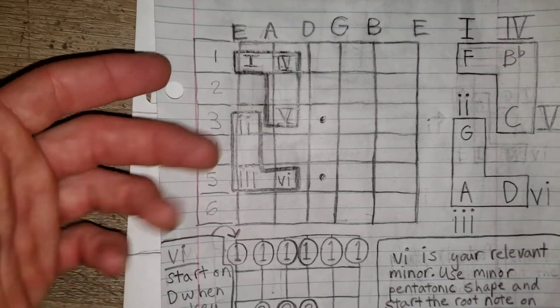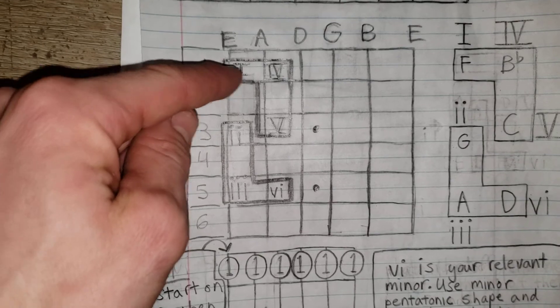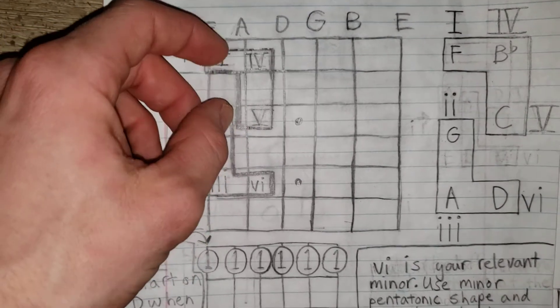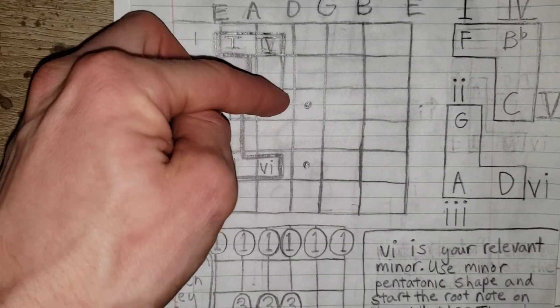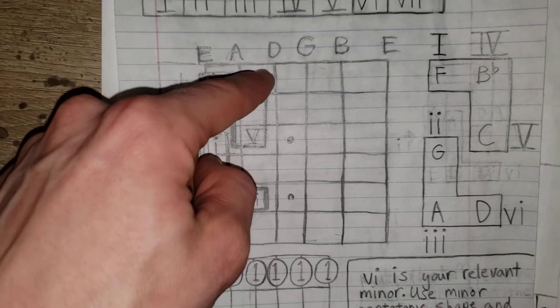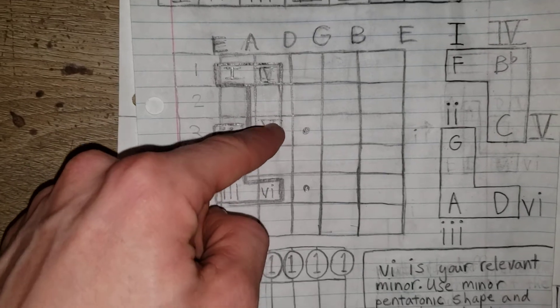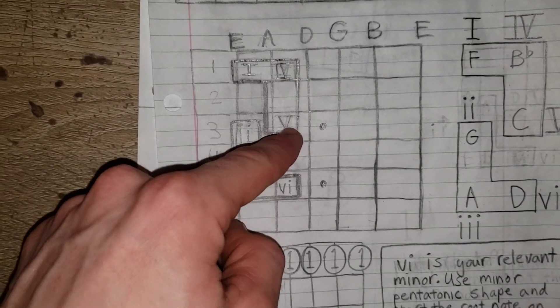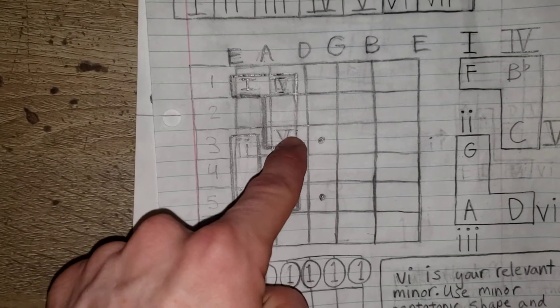So with this, we draw a 7 here. That 7 connects our 1, 4, and 5. So anywhere you are, you play a note, you know that next to it is your 4, and if you go down two frets after going over, you have your 5.